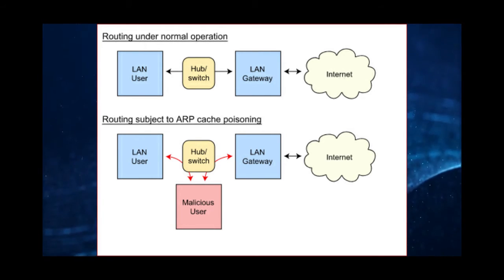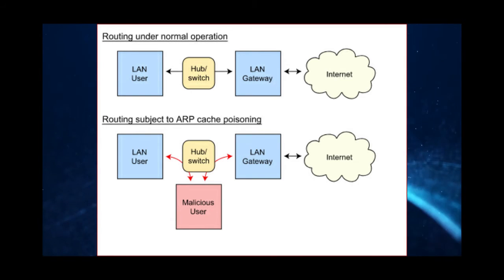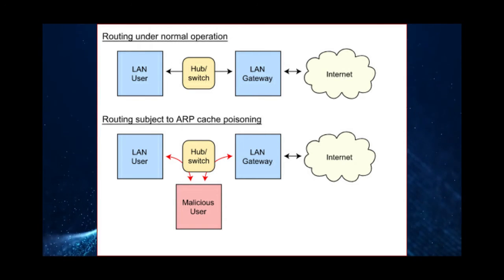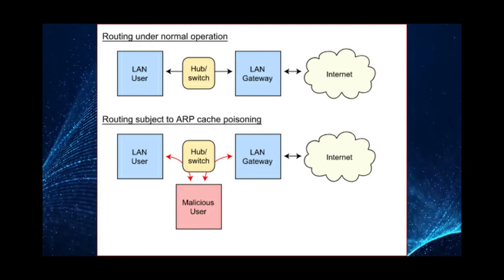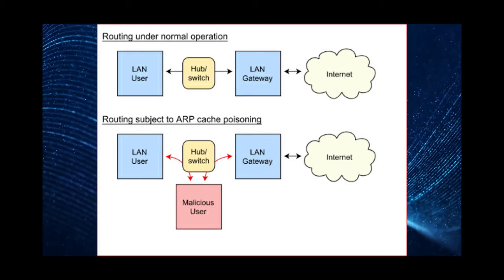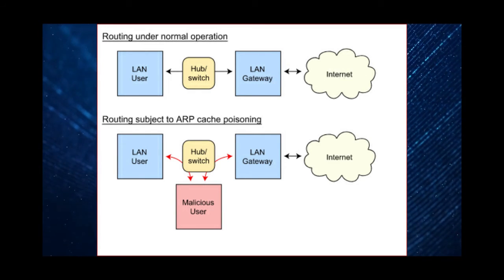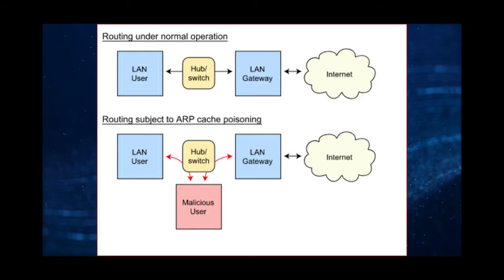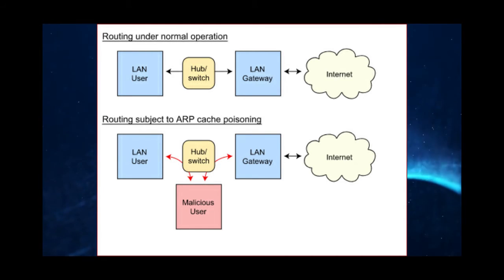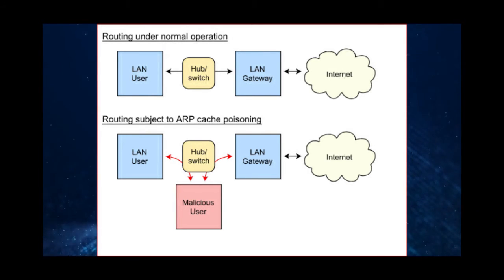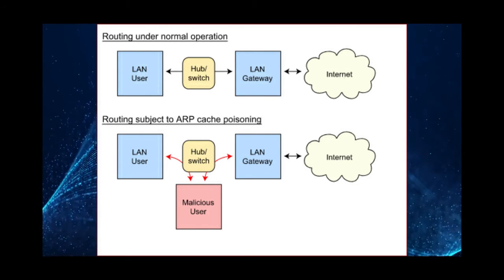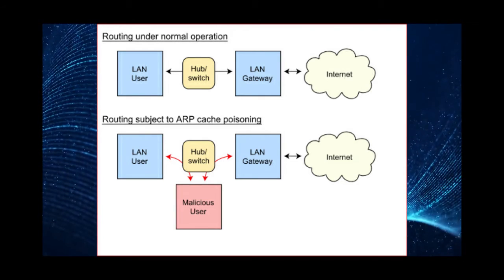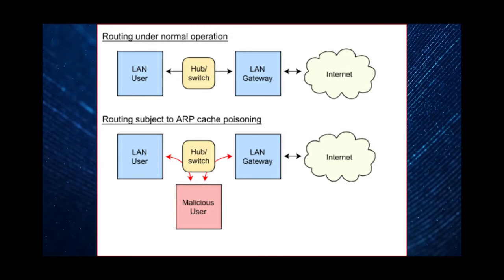When ARP cache poisoning or ARP spoofing happens, a malicious user or device connected to the same switch — where the LAN user and the L3 device are connected — will start receiving the ARP request information used for finding the network interface MAC address. The malicious device will then respond to the LAN gateway, claiming to be the actual source user wanting to talk to the internet, and sends its own ARP information to the L3 device. This is called ARP poisoning, flooding, or spoofing.